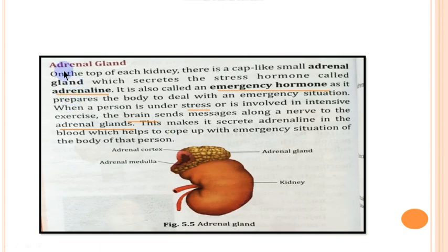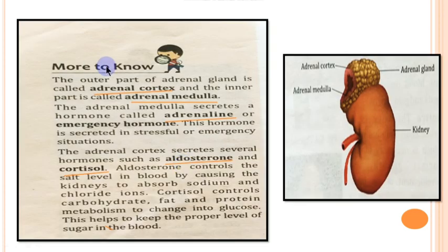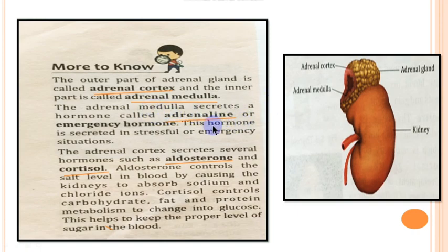Next, the adrenal gland. Its location is on the top of each kidney. The outer part of the adrenal gland is known as the adrenal cortex and the inner part is known as the adrenal medulla. The adrenal medulla secretes the hormone adrenaline, which is also known as the emergency hormone because it is secreted in stressful or emergency situations. When there is a requirement, adrenaline is immediately secreted to help the body sustain the particular stress.